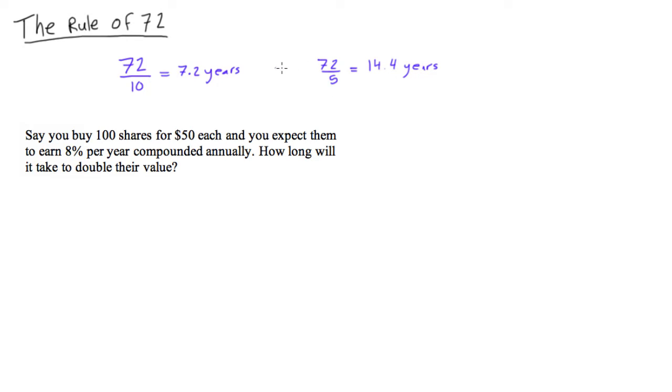Okay, what if we maybe invested at 3%? 72 over 3, that's just going to be equal to, well that would take you 24 years to double your money.